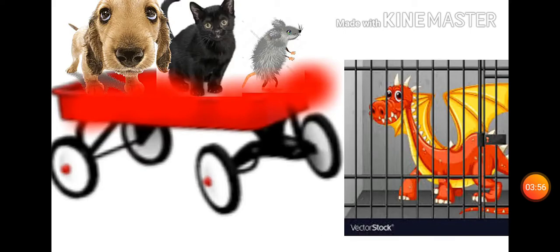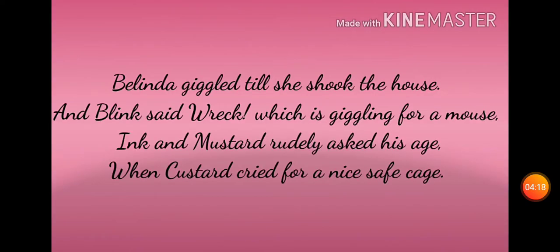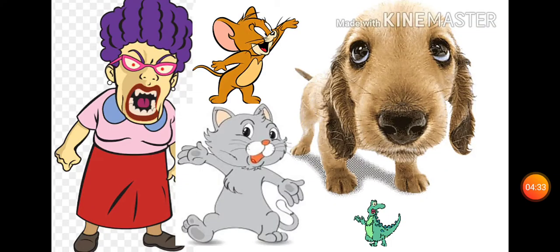Belinda Custard کو بے رحمی سے ستاتی تھی۔ Ink، Blink اور Mustard اسے چڑاتے تھے کہ وہ Percival جیسا ہے — Percival Camelot کے ڈرامے کا ایک کردار تھا جو knight بننا چاہتا تھا لیکن اس میں وہ خاصیت نہیں تھی۔ یہ تینوں اس لال گاڑی میں بیٹھ کر Custard پر ہنستے رہتے تھے۔ Custard بس ایک پنجرہ چاہتا تھا تاکہ آرام سے رہ سکے۔